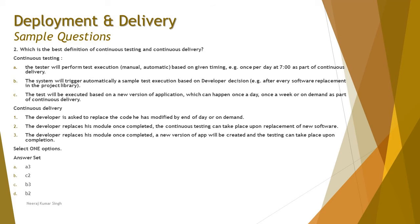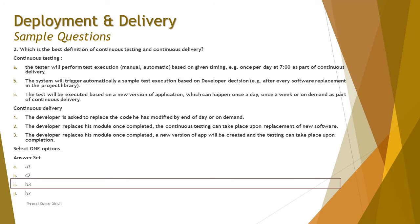Statement 3 provides the right justification: a new version of the app will be created, not just replaced — because replacing overwrites the previous version, making traceability impossible. Recalling configuration management, keeping track of existing and previous versions helps monitor modifications and supports traceability. A new version is created and testing takes place upon completion, while previous versions are retained. So the right answer for continuous delivery is 3, giving the final combination B and 3 — answer option C.